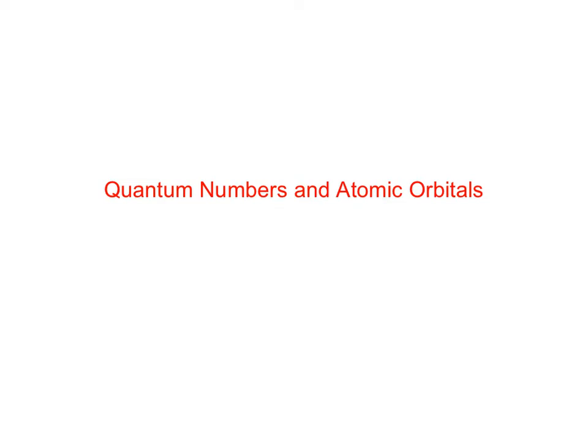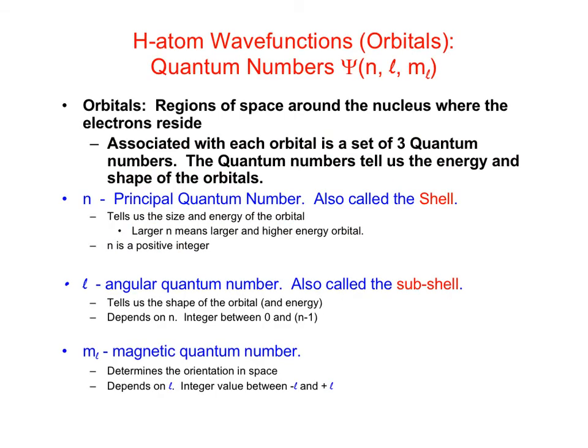In this video we're going to continue our discussion of quantum numbers and atomic orbitals that we started in the last video. This is basically the same slide that we saw at the end of the last video. The solutions to the Schrödinger equation for a hydrogen atom are called orbitals. These orbitals have unique energies and are characterized by a series of three quantum numbers. We can think of the quantum numbers as being like an address — they tell us the shape of the region in space around the nucleus that the electron is likely to occupy, and they tell us what the energy of the orbital is going to be.